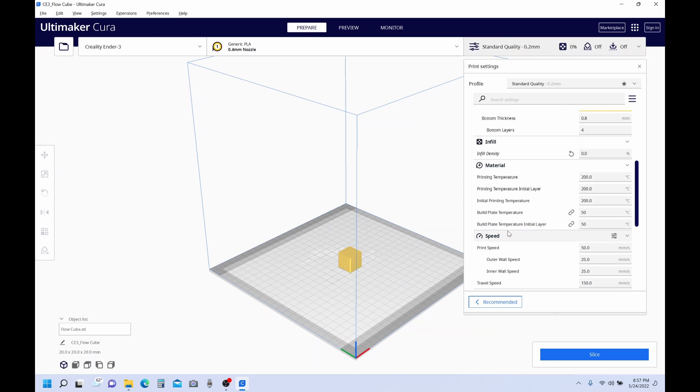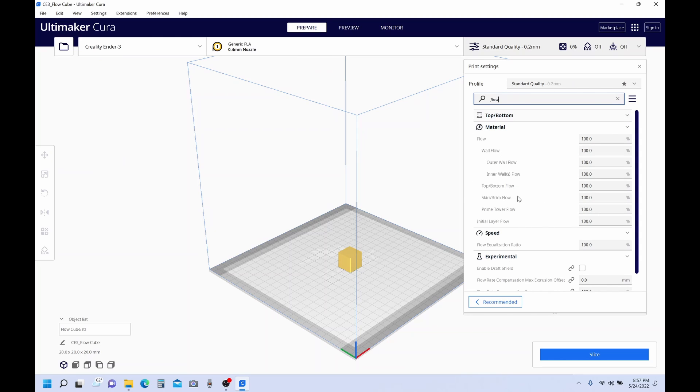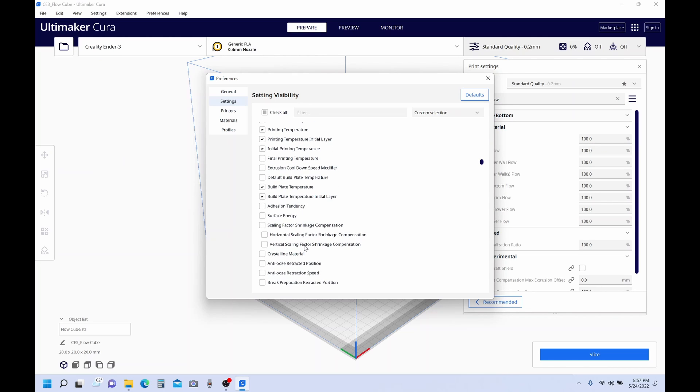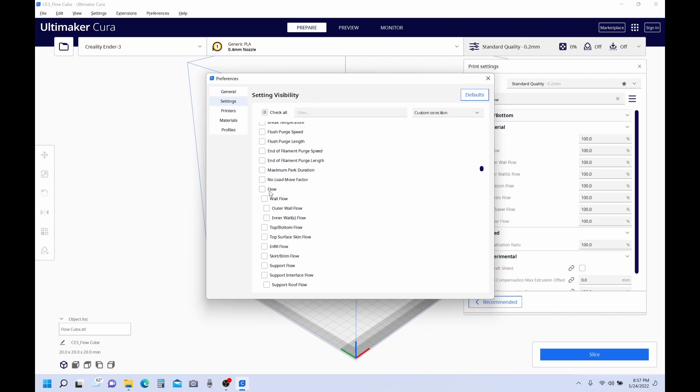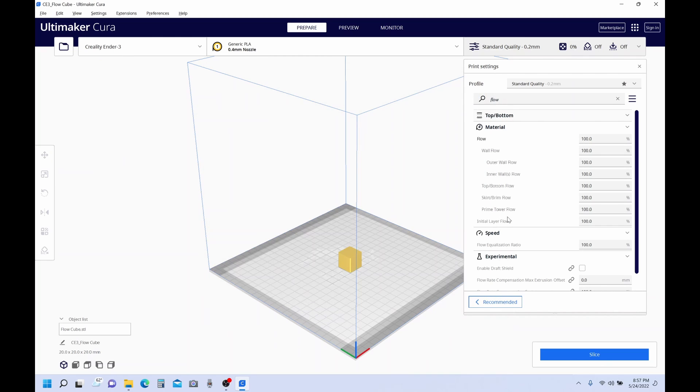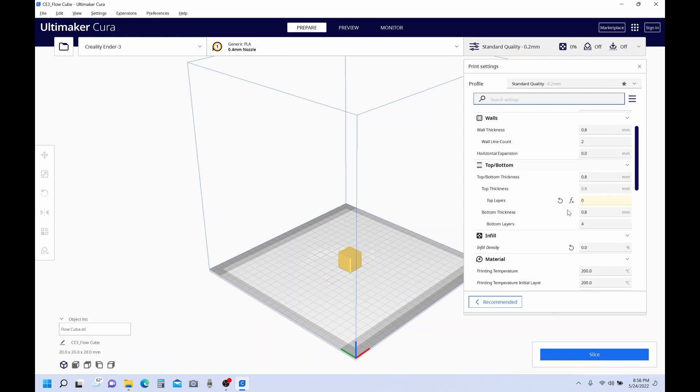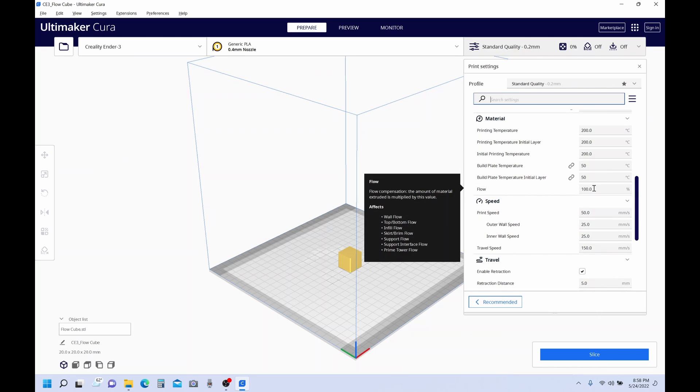And now we've got to change our flow to 100%, but I'm not seeing flow. If that's the case for you, come up here to the search box and start typing flow, and that will take you right to where it's at. It's under material. We click these little lines. That takes us to Cura's inner workings, where it hides all the good stuff, and we'll come down and we'll add a check mark next to flow, and that will make sure that flow is always there for us from now on.